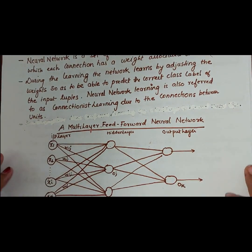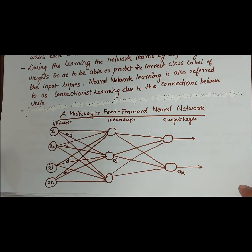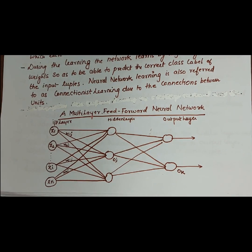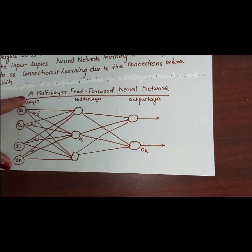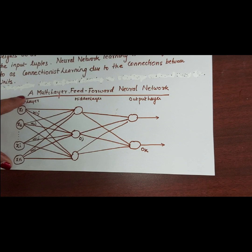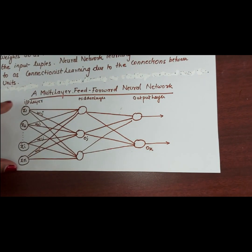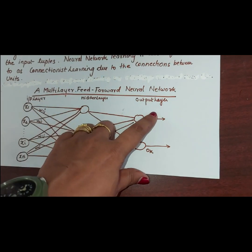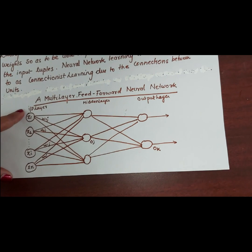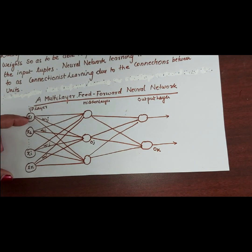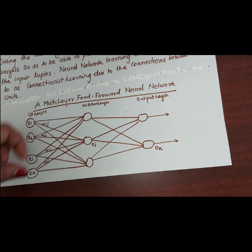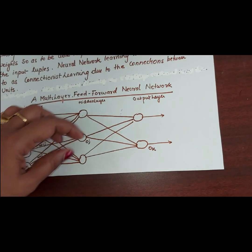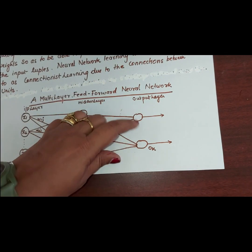In neural networks we study the multi-layer feed-forward neural network. A multi-layer feed-forward neural network consists of an input layer, one or more hidden layers, and an output layer. Each layer is made up of some units — the input layer, hidden layer, and output layer are each made up of their respective units.